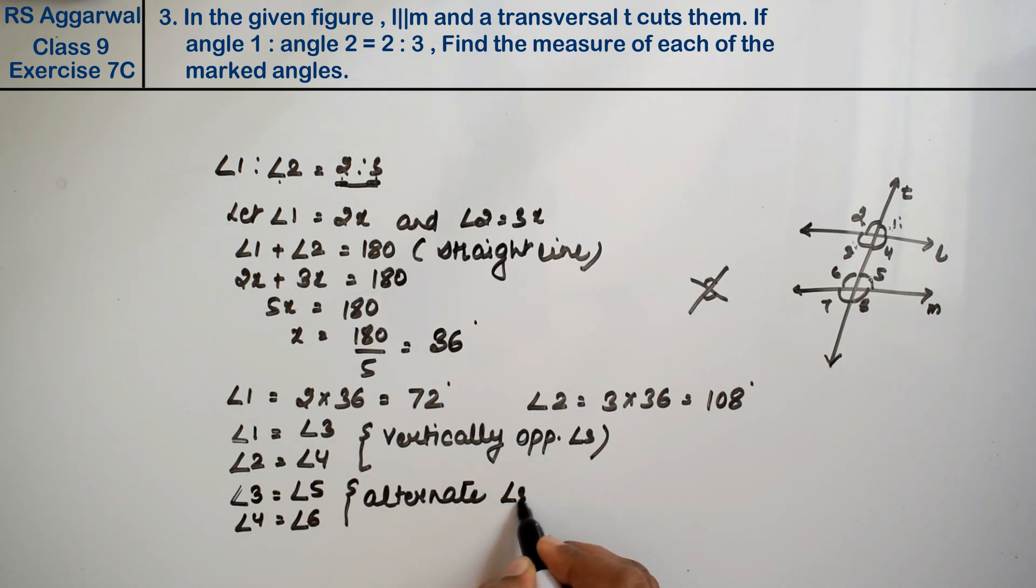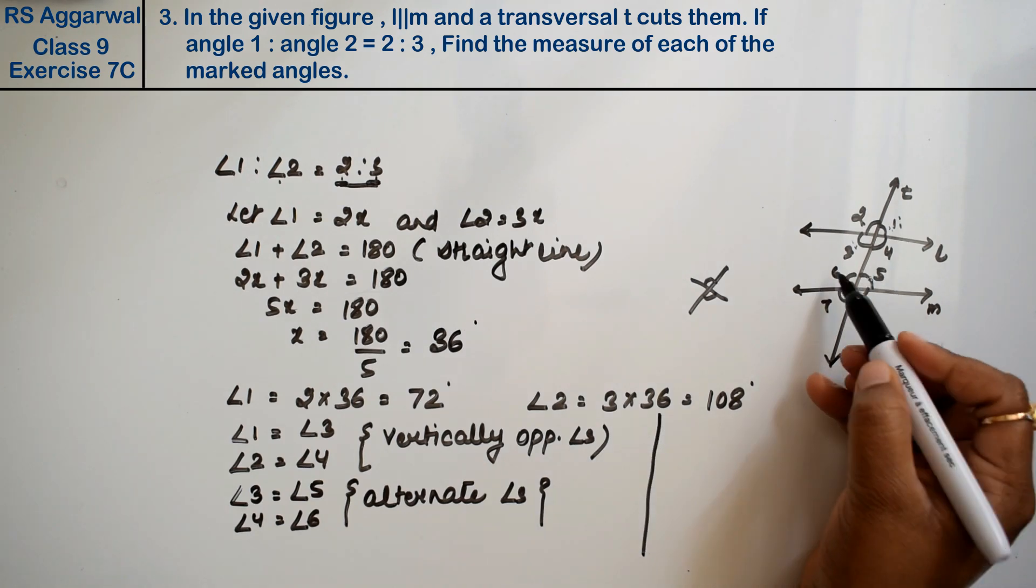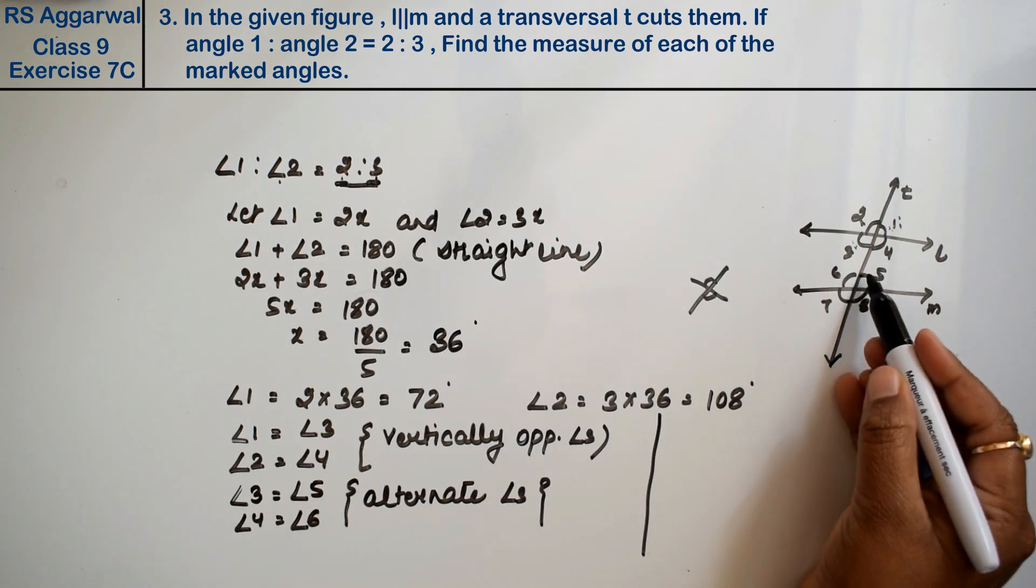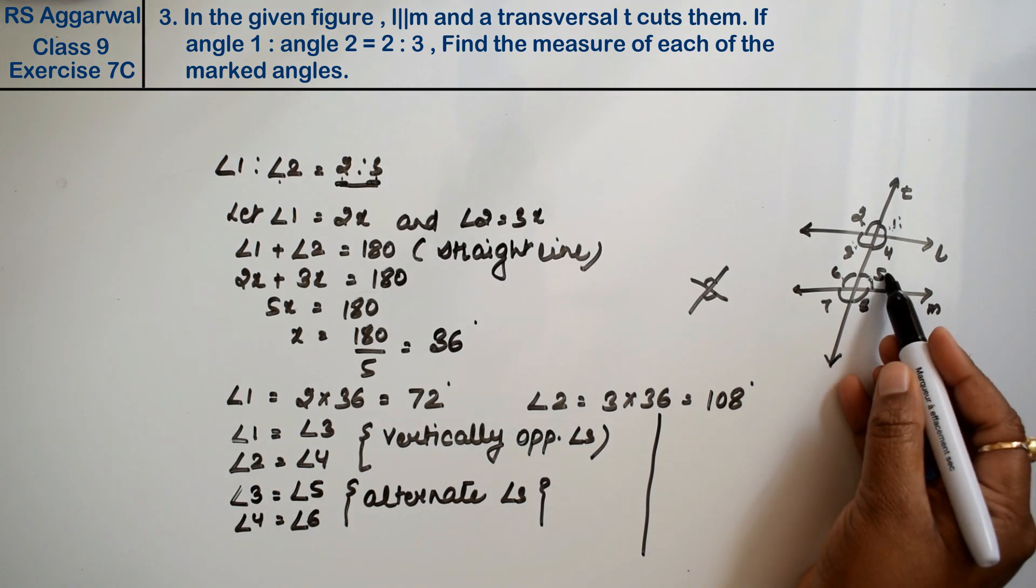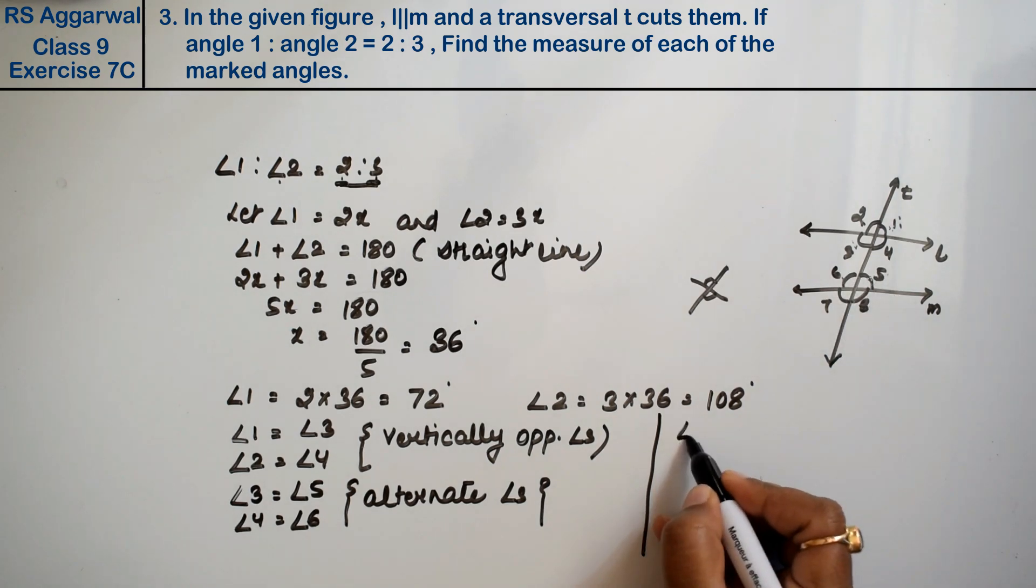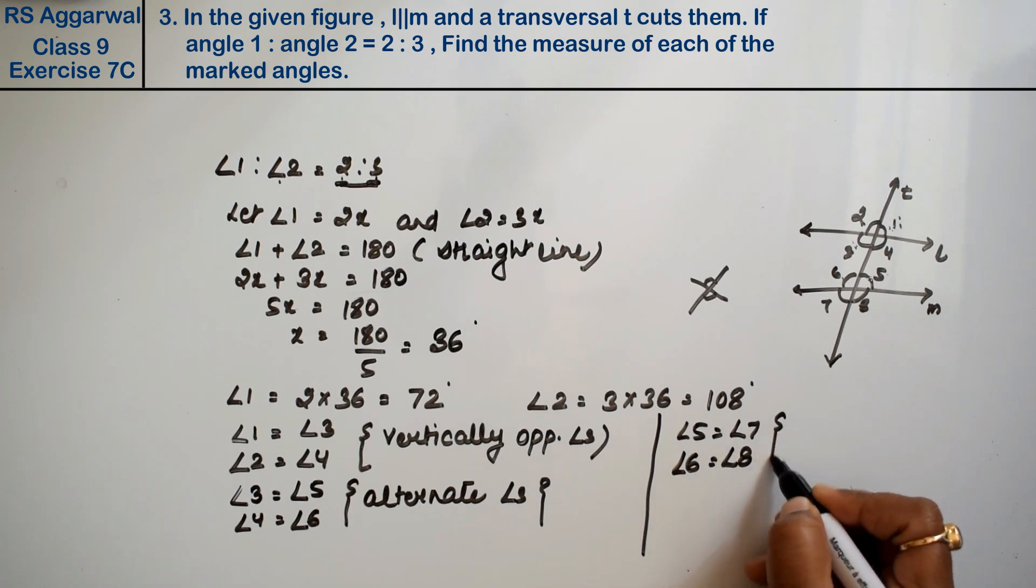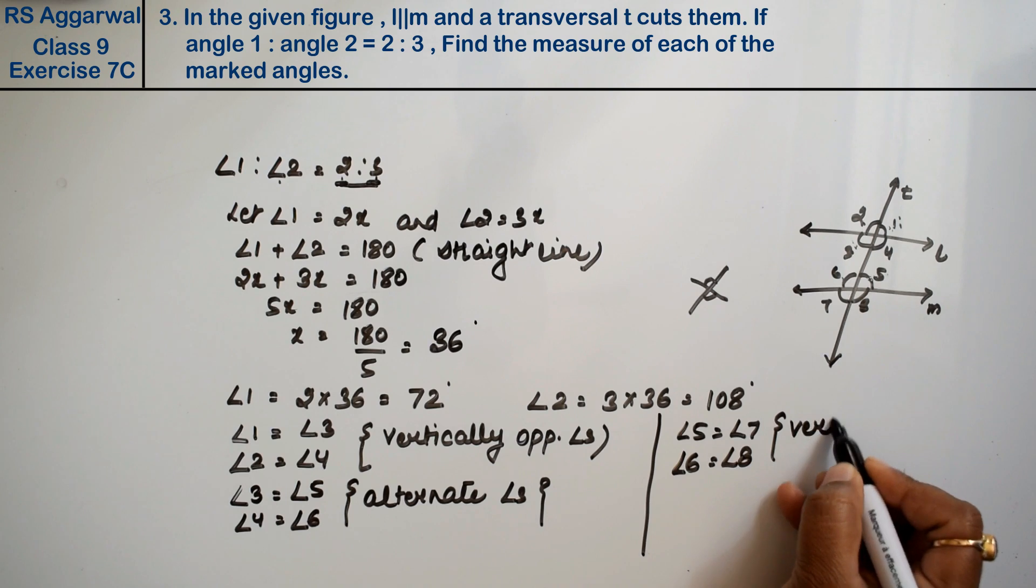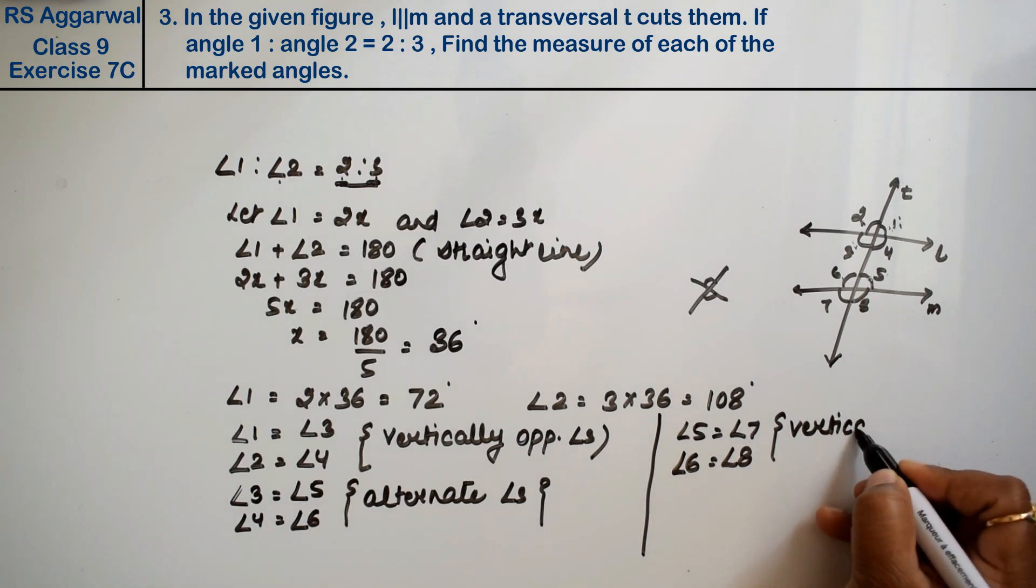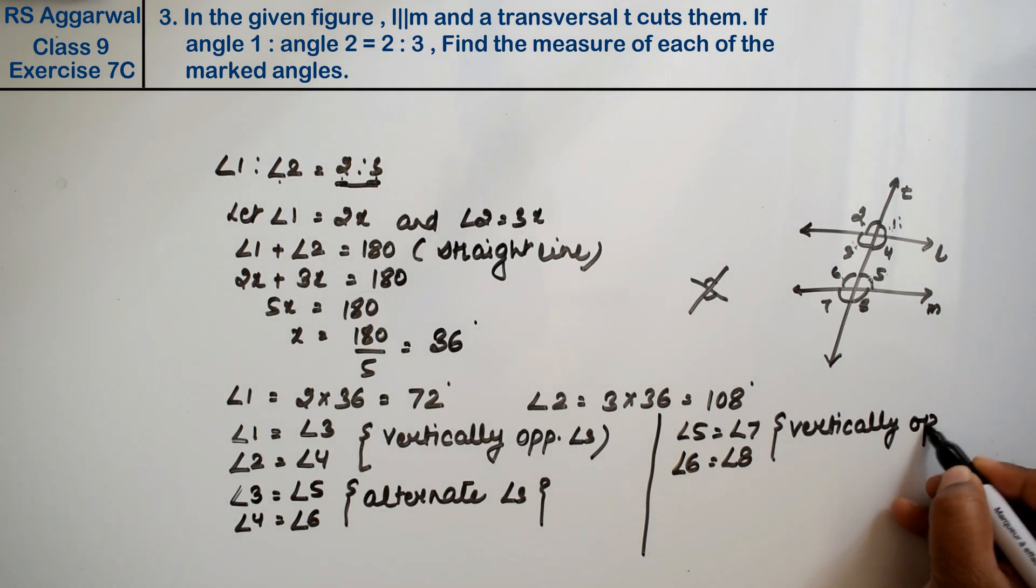Now we have 5 and 6. So 6 and 8 are equal, and 5 and 7 are equal. Why? Because these are again vertically opposite angles.